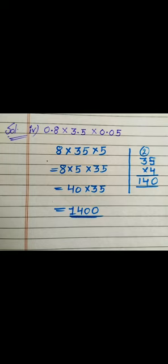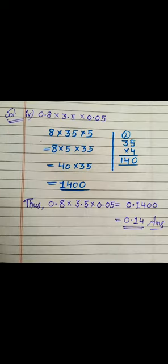Now as you are seeing in the question: the first number has 1 decimal place, the second has 1 decimal place, and the third has 2 decimal places. We add these — total decimal places are 4. So we mark the decimal after 4 digits, meaning before 1, giving 0.1400. As we know, trailing zeros after the decimal have no value, so we can write this as 0.14. This is our final answer.